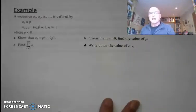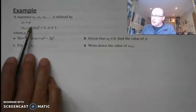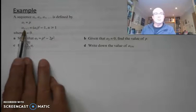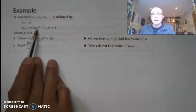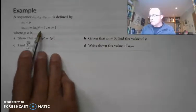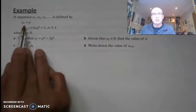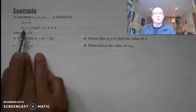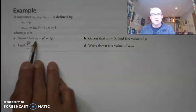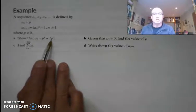One more example — this one's a bit more complicated. This one is in the textbook, you can have a look in there as well. We need a bit of problem-solving skill to get to the bottom of this one. We've got a much more complicated relationship between u_{n+1} and u_n: we're squaring the previous term and then subtracting 1. So it's not going to be arithmetic and it's not geometric — it's more complicated. But we know the relationship and the starting value, so we can generate all the terms. Part A: we've been asked to show that a3 equals p to the power 4 minus 2 lots of p squared.